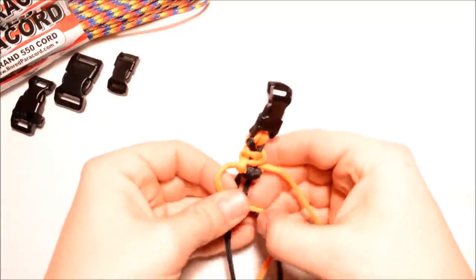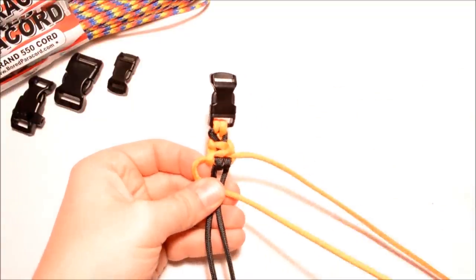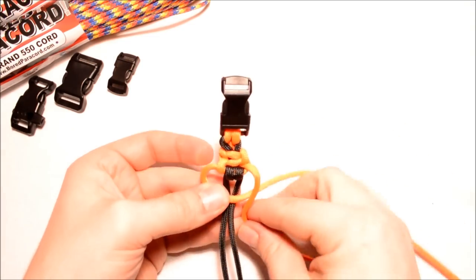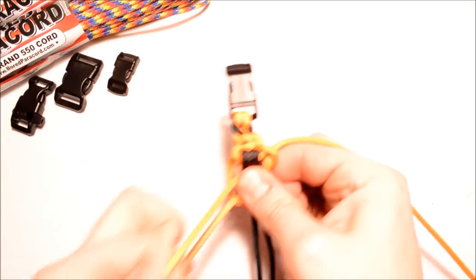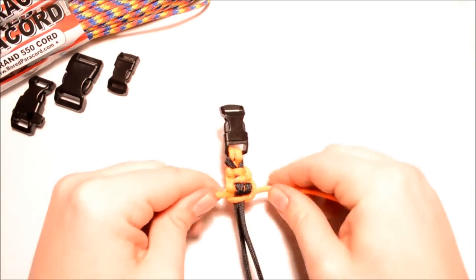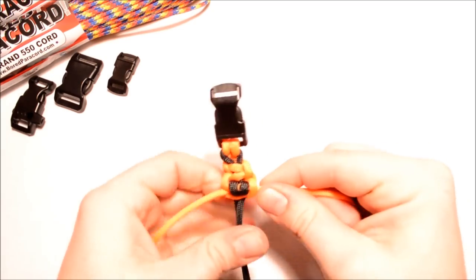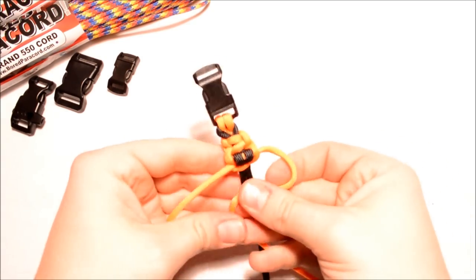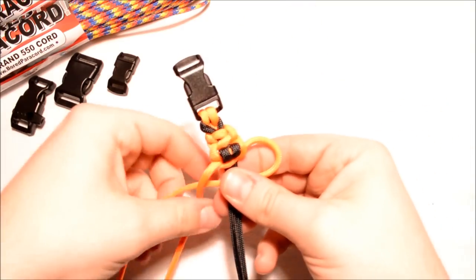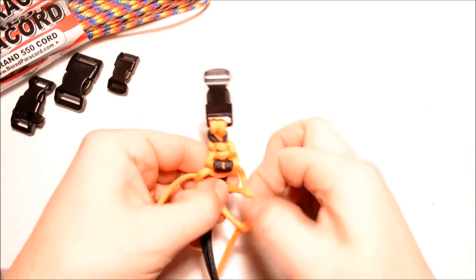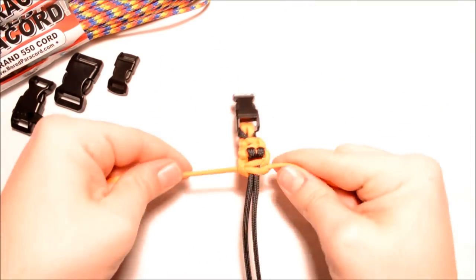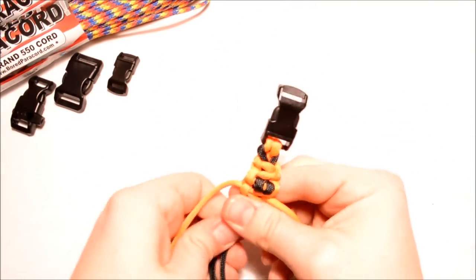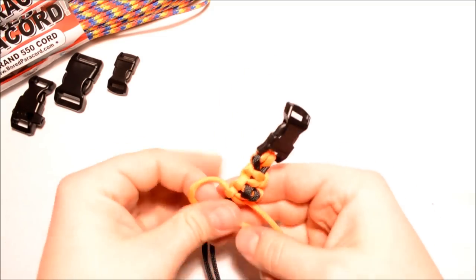Then you're just going to do three more Solomons. We've got the left over the center, right over left, behind the back, pull that tight. Cinch it up. We've got right over center, left over right, go around the back, through, and cinch it up. We're going to do one more.